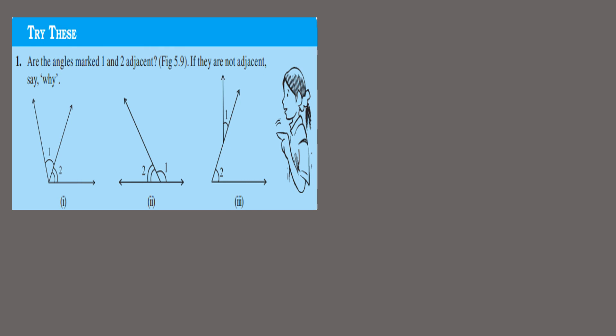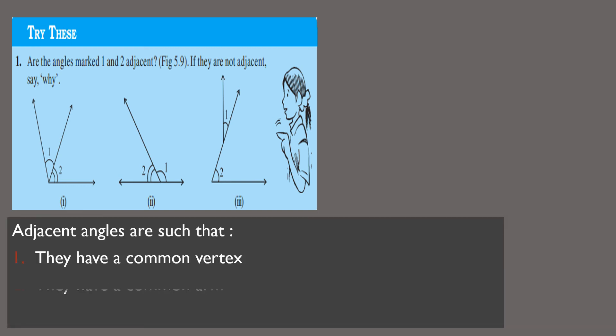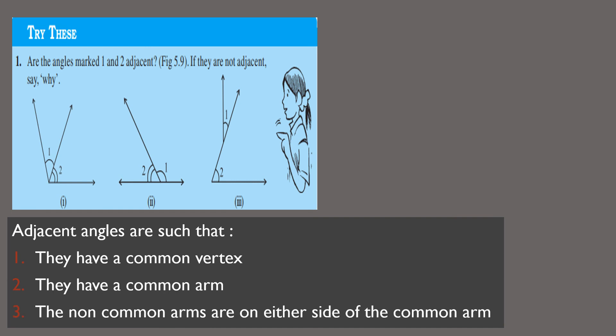Let us try these questions: are the angles marked 1 and 2 adjacent? In the first question, angles 1 and 2 are adjacent, since they have a common vertex, a common arm, and the non-common arms are on either side of the common arm. In the second question, angles 1 and 2 are also adjacent for the same reasons, but with one more speciality — angles 1 and 2 form a straight line, so these two adjacent angles are also supplementary.